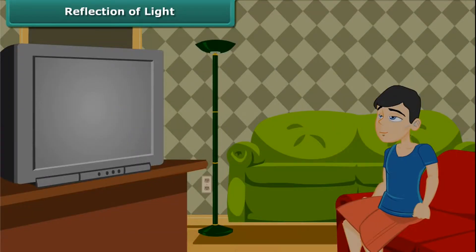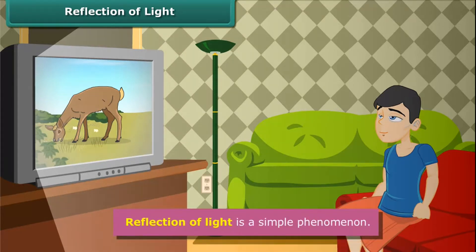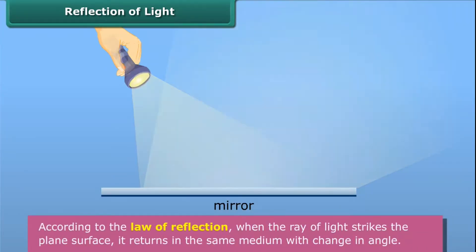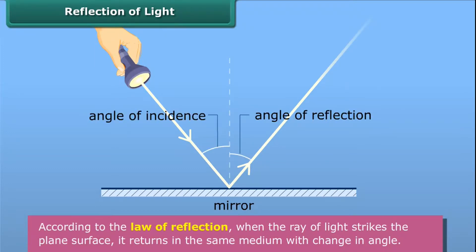Reflection of Light. Can you tell how do we see objects? We see objects when light reflected from them reaches our eyes. Reflection of light is a simple phenomenon. According to the law of reflection, when the ray of light strikes a plane surface, it returns in the same medium with a change in angle.